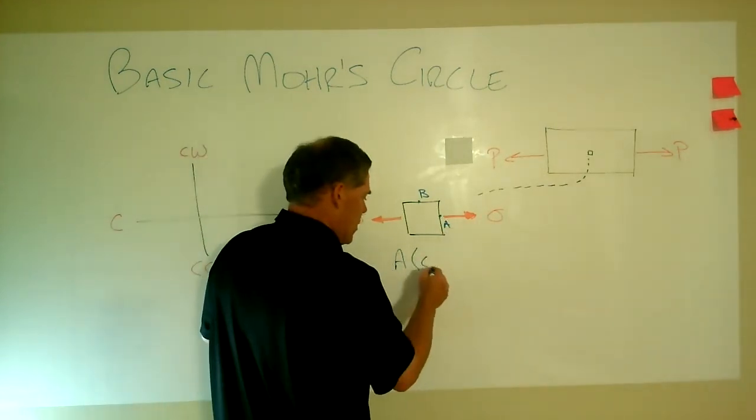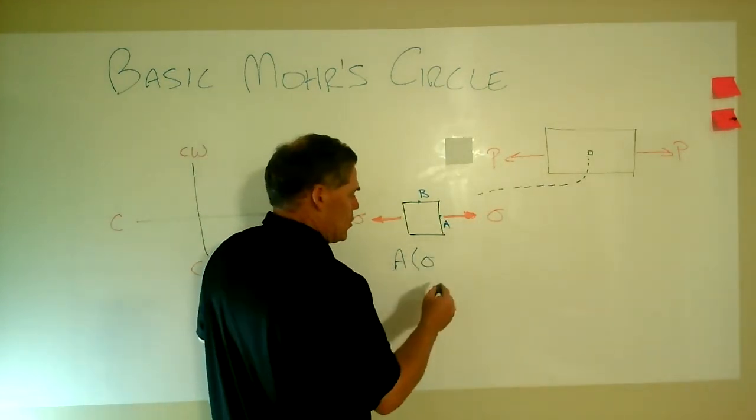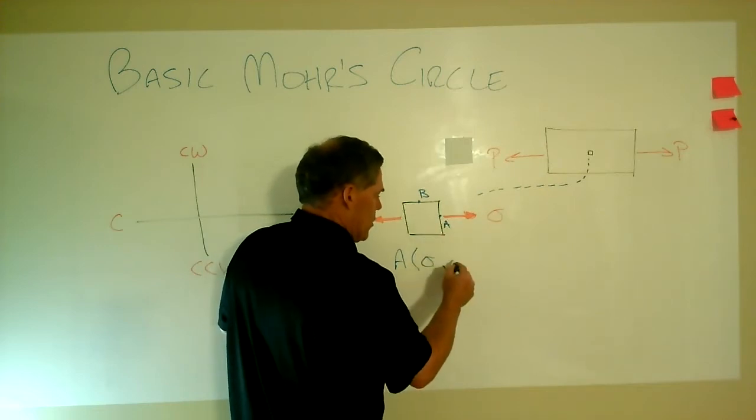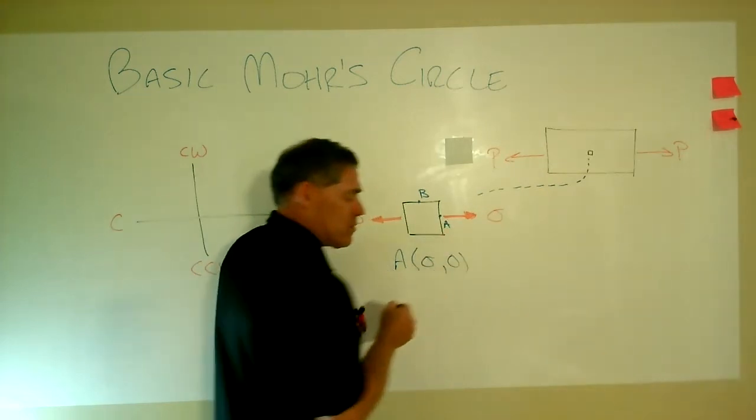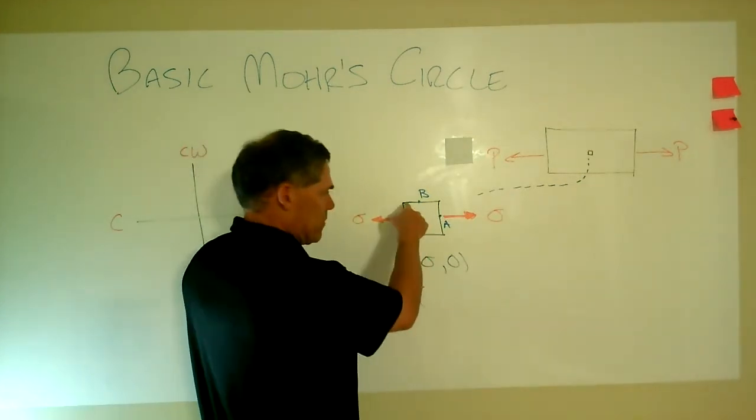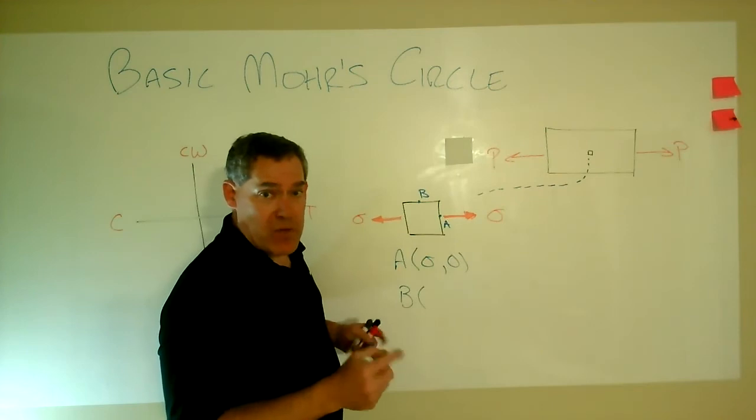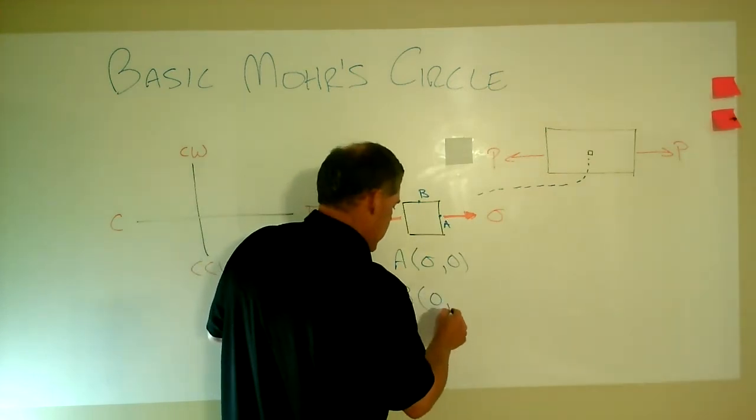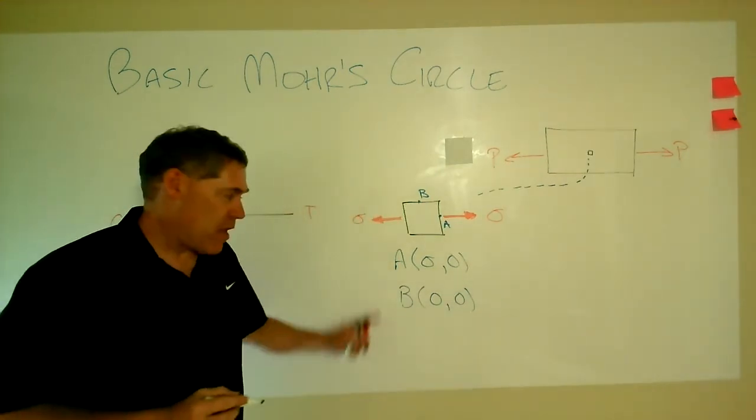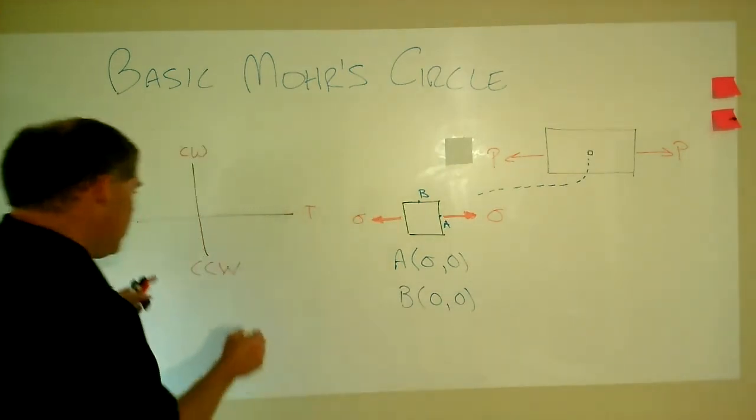And so set up the axes first. And then the next thing to do is you got to get two points, two points that are on orthogonal or 90 degree planes. Usually take that as the x plane and the y plane. So there's your point A. And we want the normal stress and the shear stress on that plane. The normal stress would be our sigma is in tension.